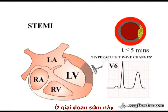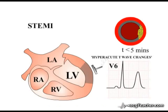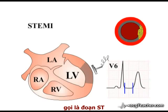In these early stages, hyperacute T wave changes are followed by a very characteristic ECG abnormality in the affected leads. The line on an ECG readout connecting the end of the QRS complex and the T wave is called the ST segment.